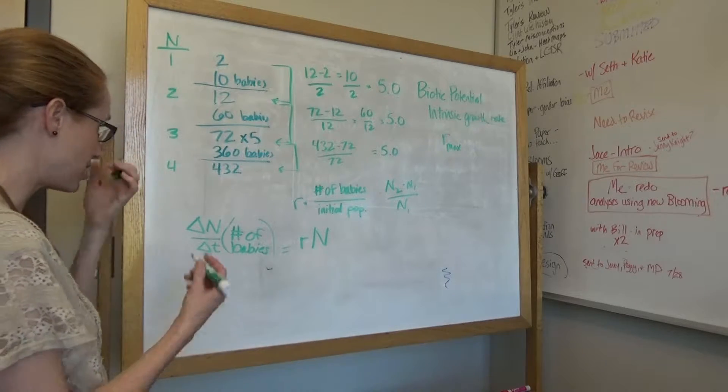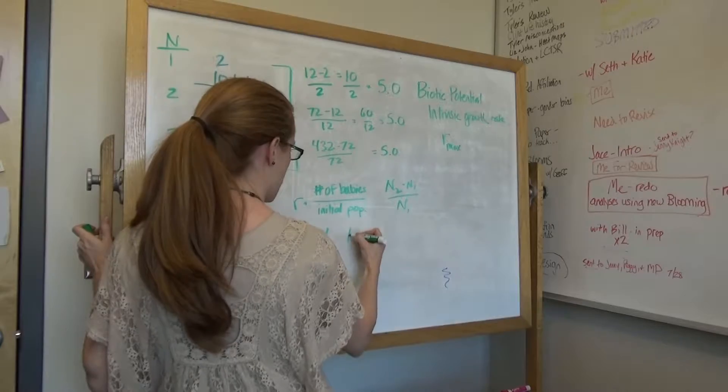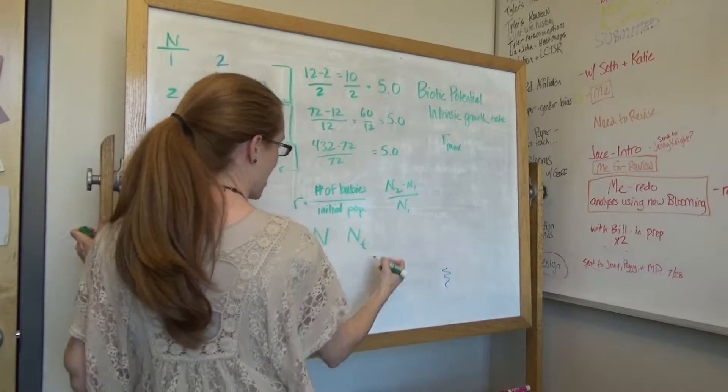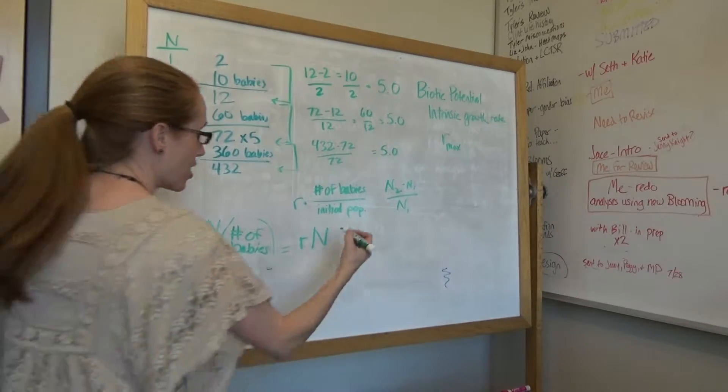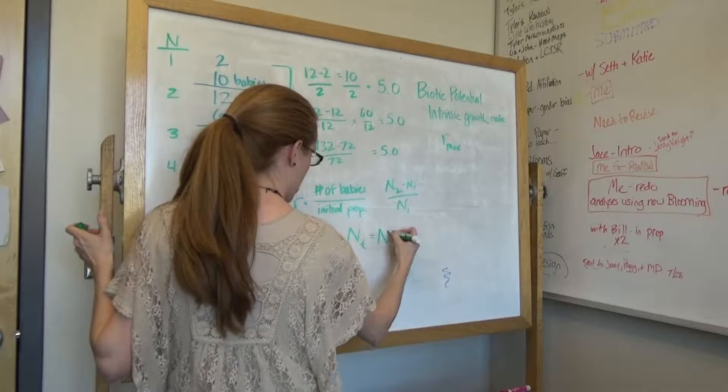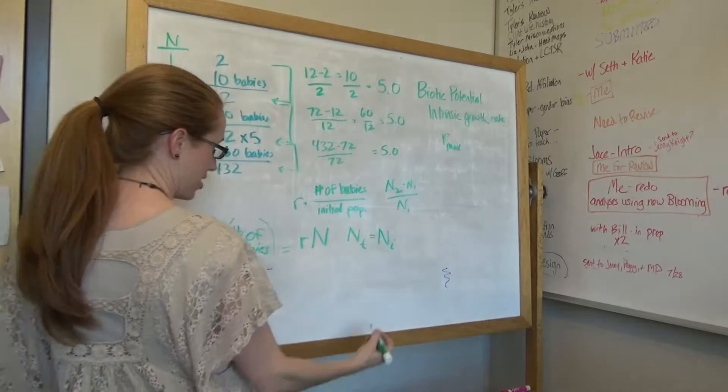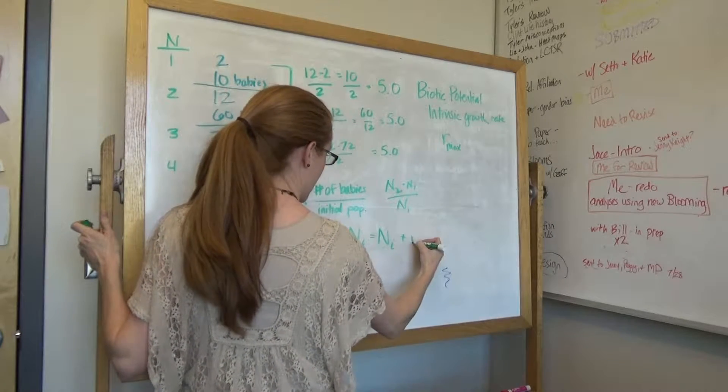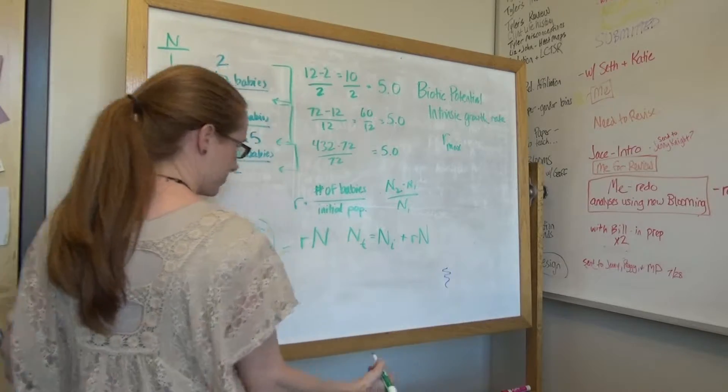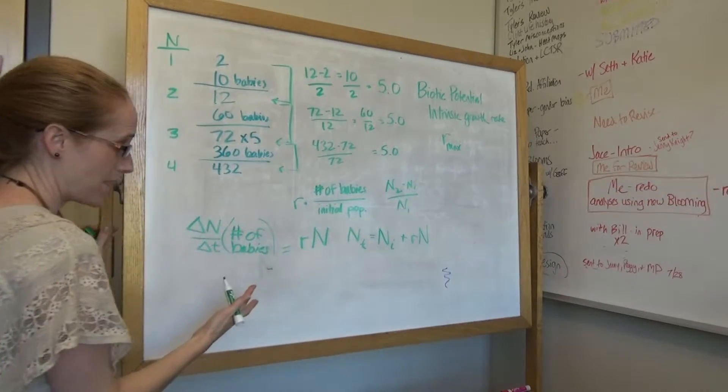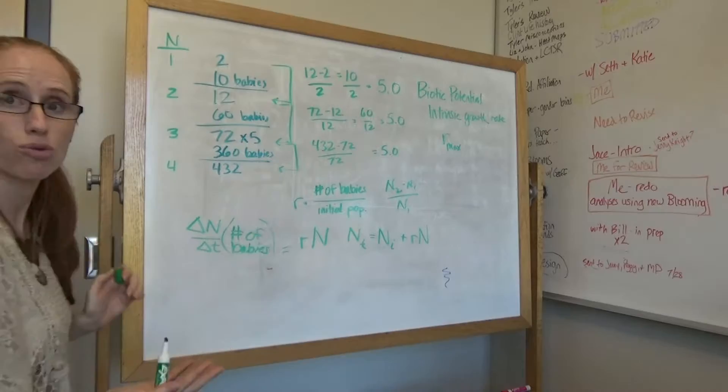Now, some students like to write the actual equation out, and it would be the population size at time T would be your initial population size, plus the number of babies, R times N. Okay, either equation is fine. This is the exponential growth equation.